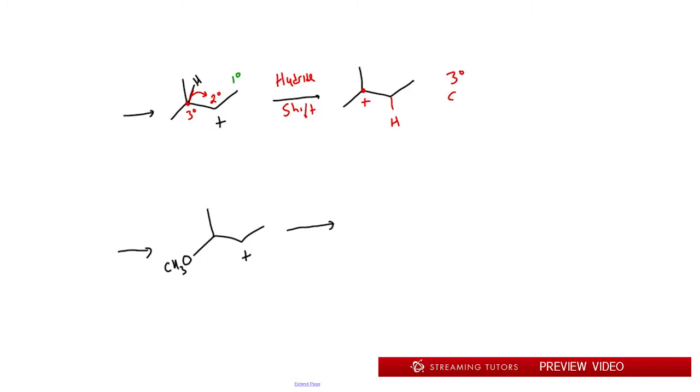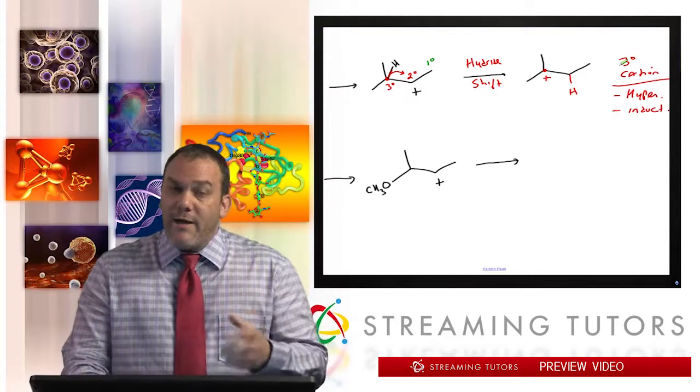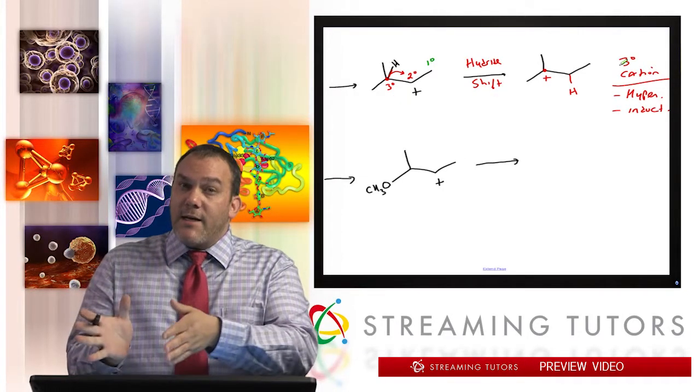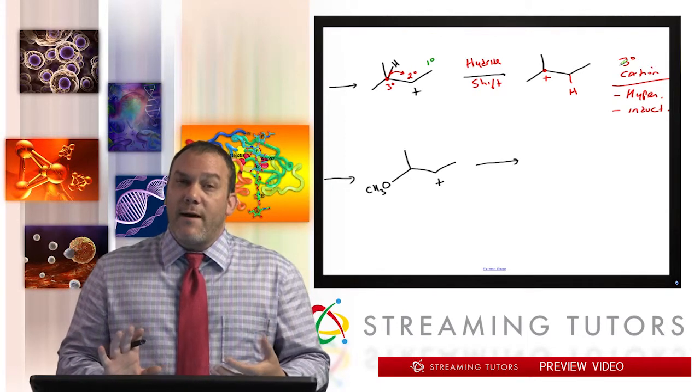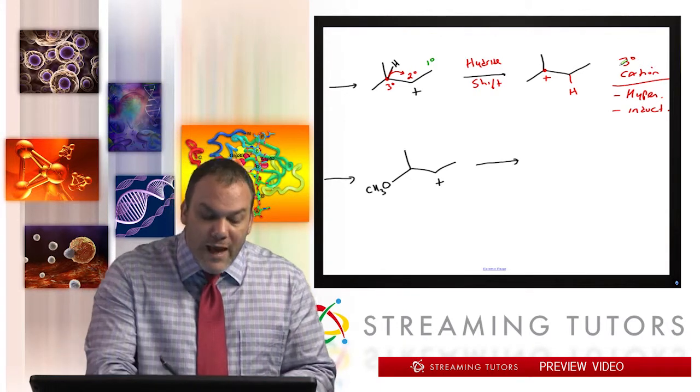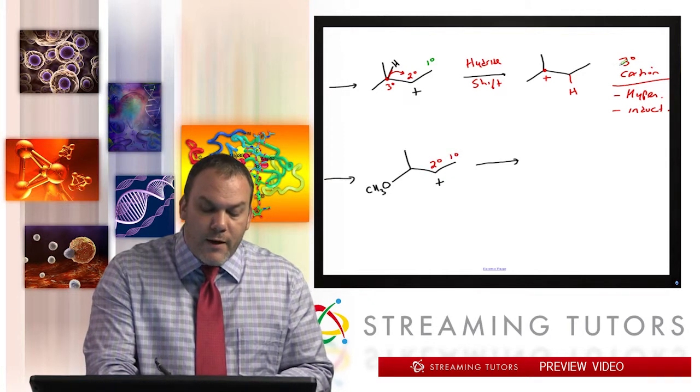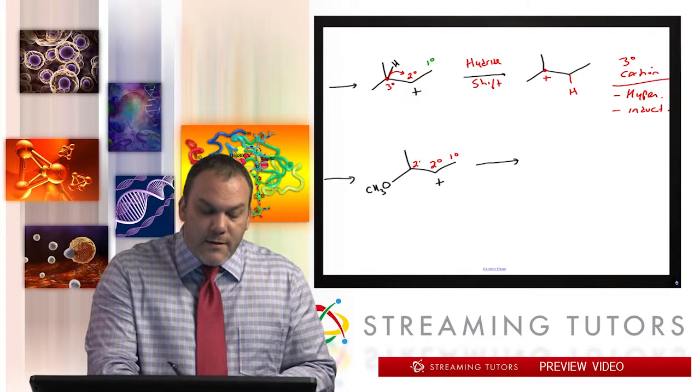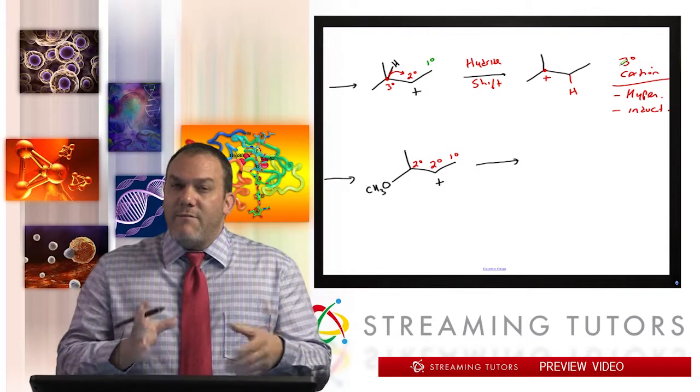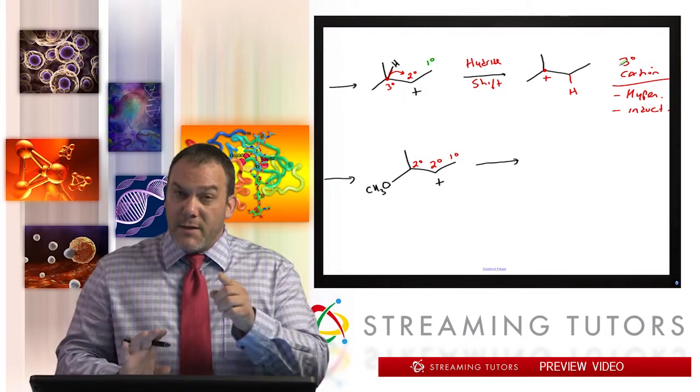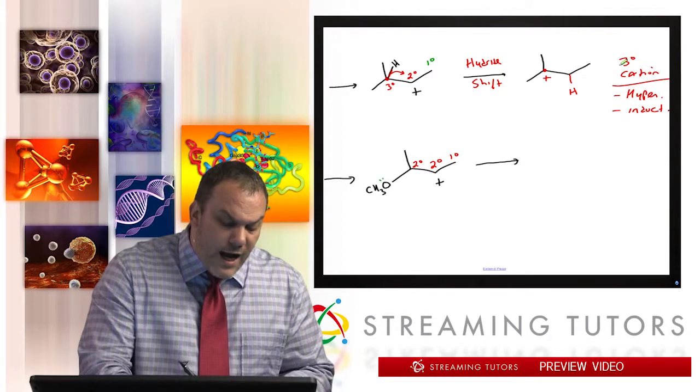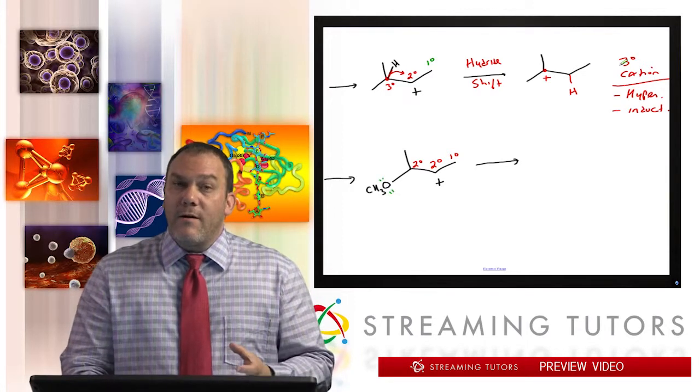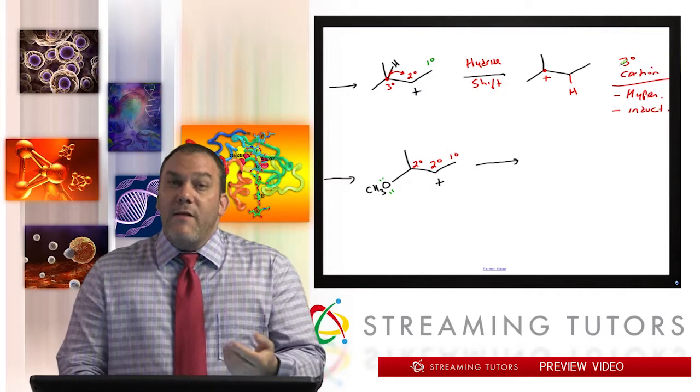So those are the reasons why the top one would even shift from a secondary cation and go over to the tertiary carbocation. In this case we have a secondary carbocation, this is primary, and the neighbor on the left is secondary. So the neighbor on the left doesn't seem to make sense to do a shift, but it does, because this oxygen has lone pairs.